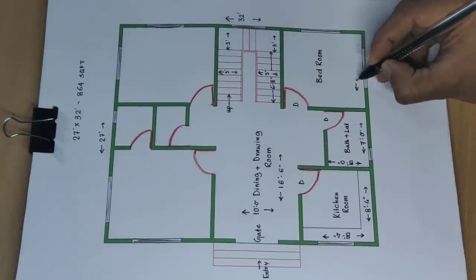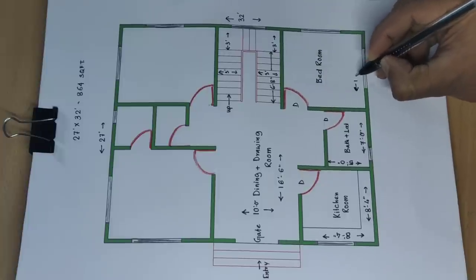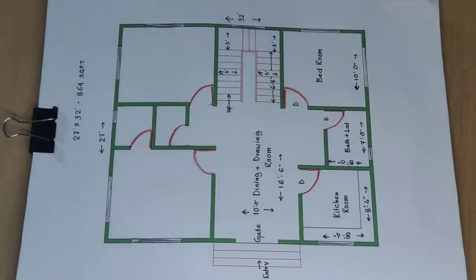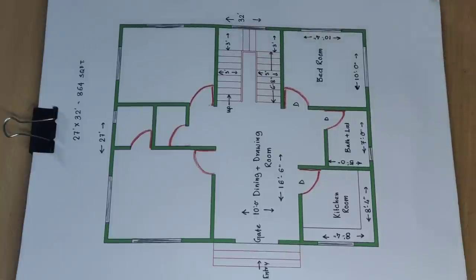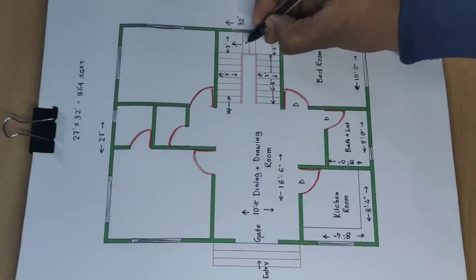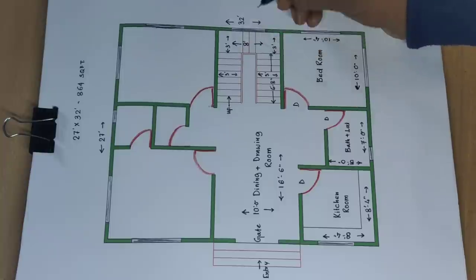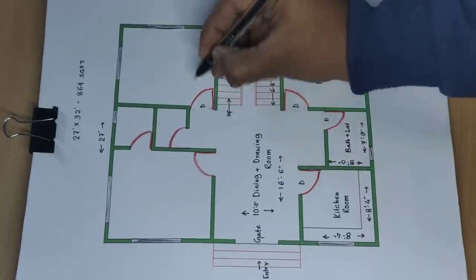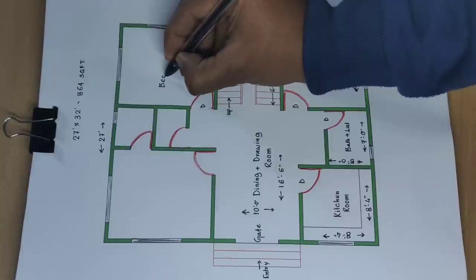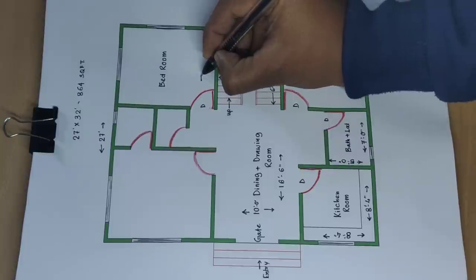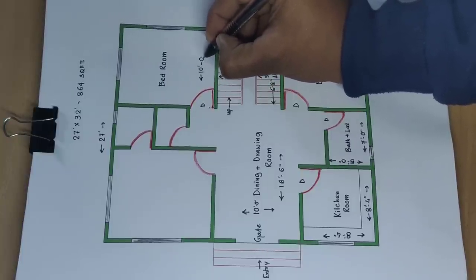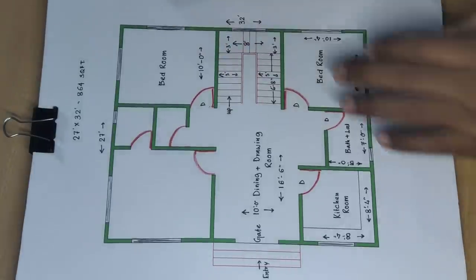This is bedroom one — distance 10 feet 0 inches and 10 feet 4 inches. This side distance 8 feet, and door. This is second bedroom — distance 10 feet this side.